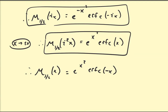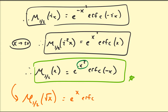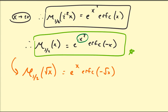A nice corollary is to evaluate E_{1/2} at √x: E_{1/2}(√x) = e^x · erfc(-√x). We're going to use this identity a little bit later.